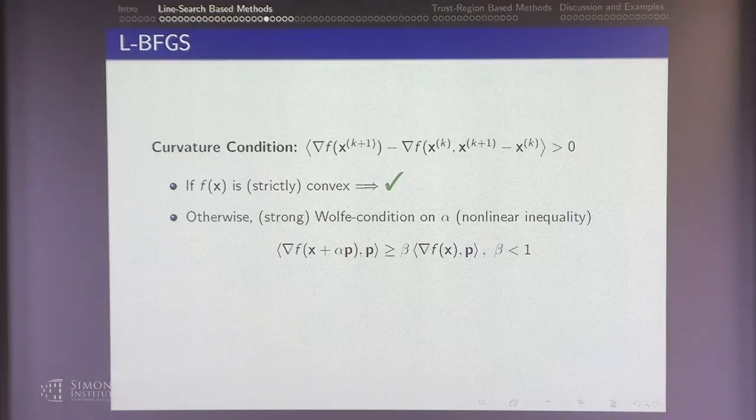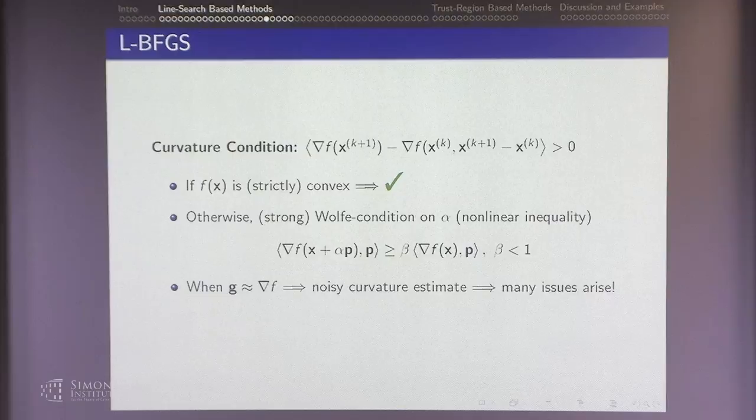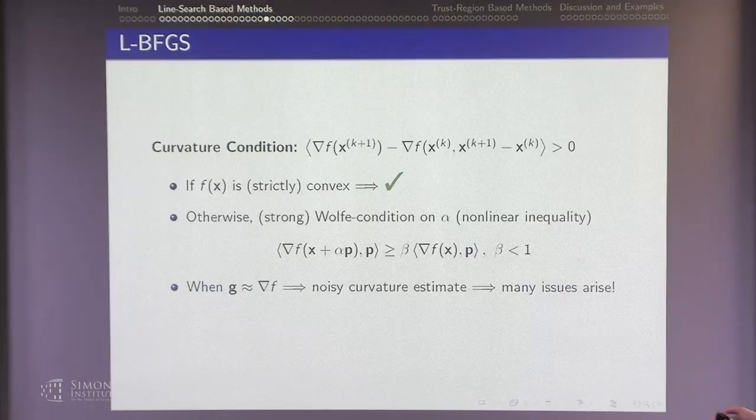The problem starts when you add stochasticity. When gradients are noisy — say a noisy estimate here and a noisy estimate there — you're taking the difference of two noisy things. How can you ensure the curvature condition is satisfied? That's a big problem when taking BFGS into a stochastic regime.